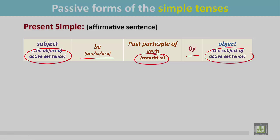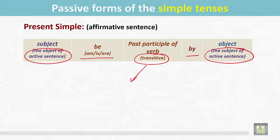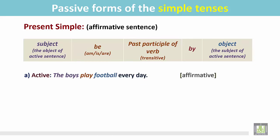The transitive verb — what is it? The transitive verb is a verb that is followed by an object. An object is a noun or a pronoun. See the example: 'The boys play football every day.'